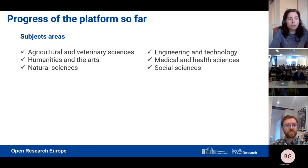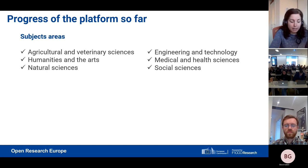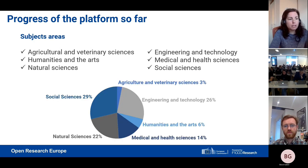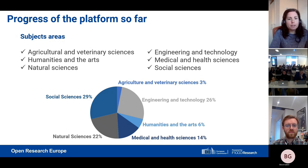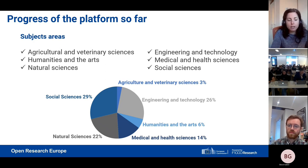The subject areas we have content from include agricultural and veterinary sciences, engineering and technology, humanities and the arts, medical and health sciences, natural sciences (including biology, chemistry, physics, mathematics, computer and information sciences, earth and environmental sciences), and social sciences. At the moment, most content is from social sciences at 29%, followed by engineering and technology at 26%, and natural sciences at 22%. We want to make sure all different subject areas are represented more or less following the funding they have received.